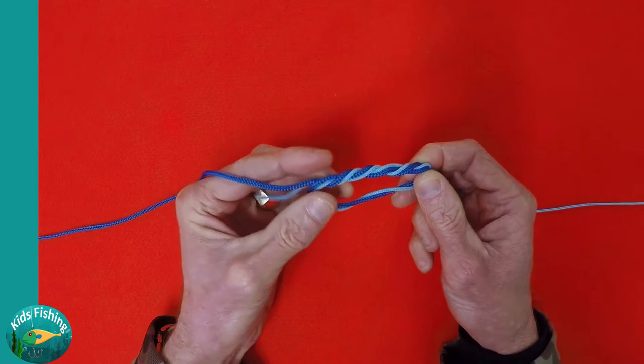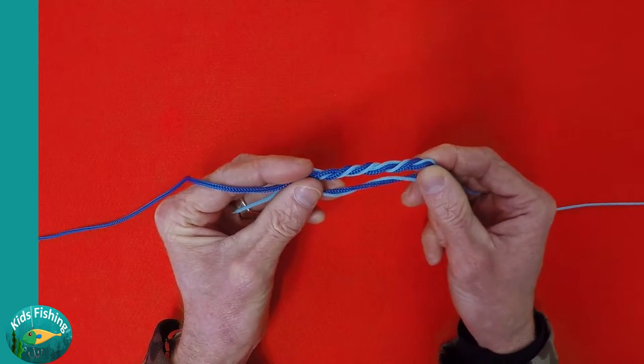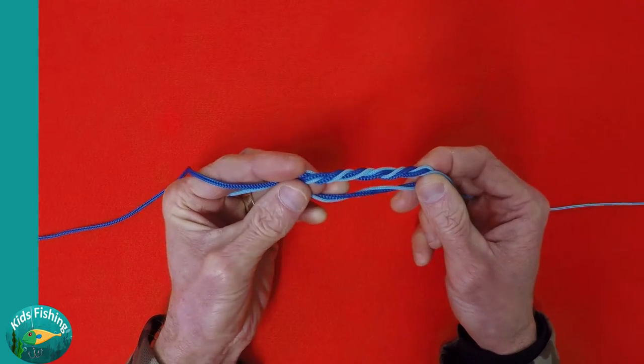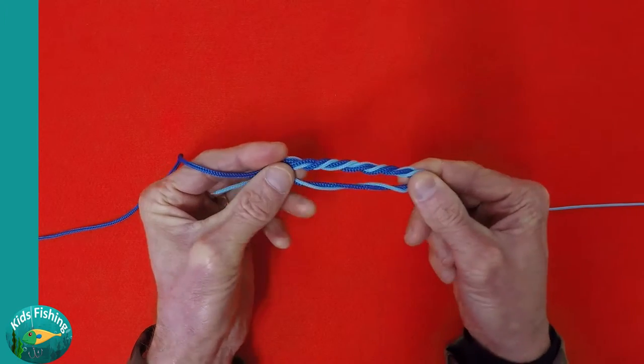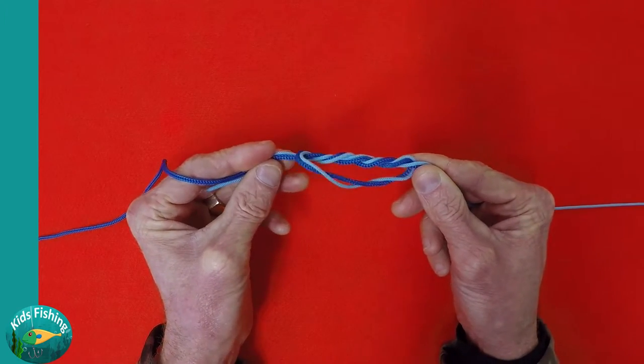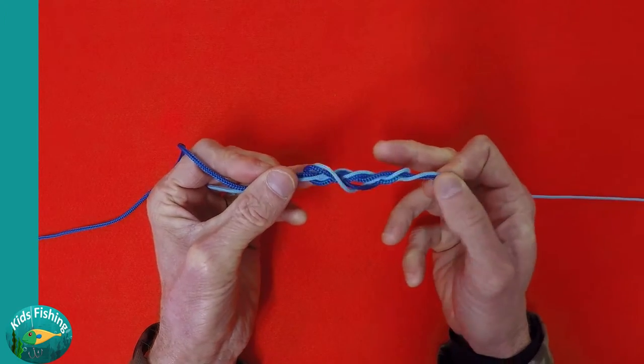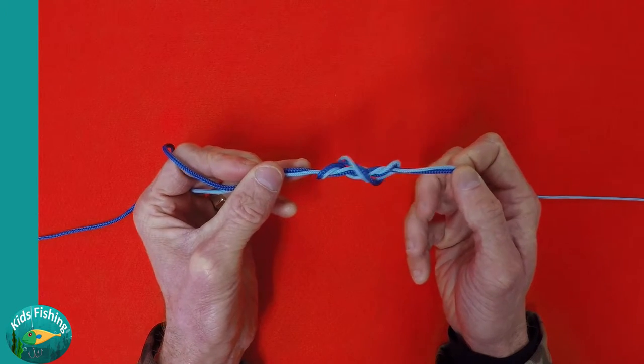Also it depends on how thin the line is. If it's very thin nylon you might need to do up to seven wraps just to give it traction. We're holding both ends of the knot here and we're just going to cinch it up.